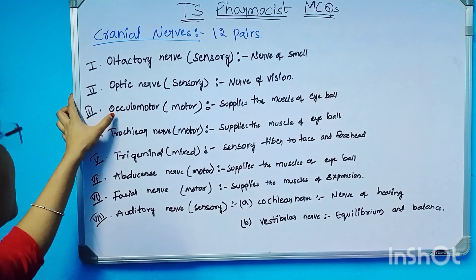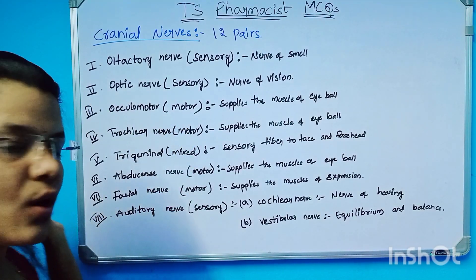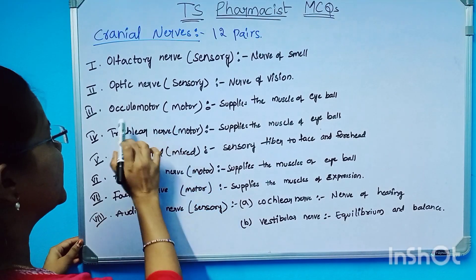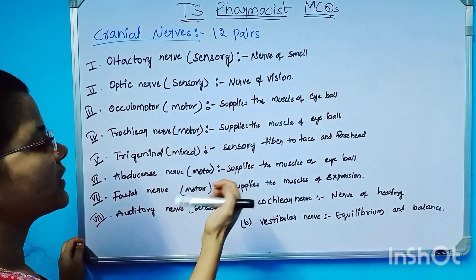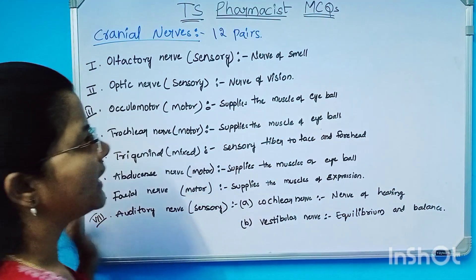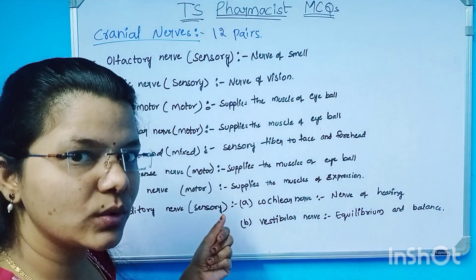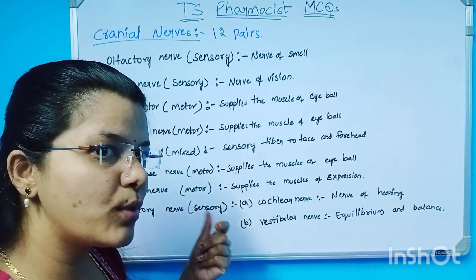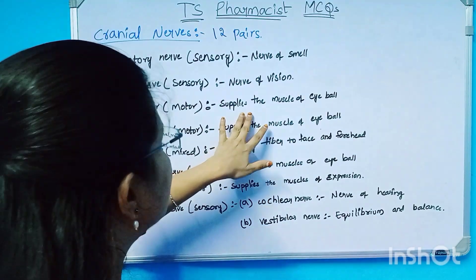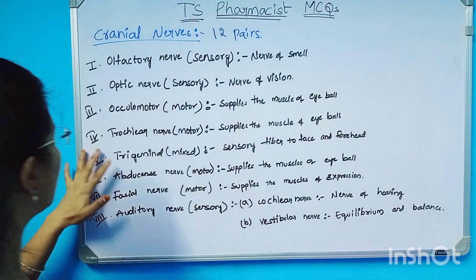The third cranial nerve is the oculomotor nerve. It is a motor nerve and it supplies the muscles of the eyeball. The oculomotor nerve is responsible for eye movement.